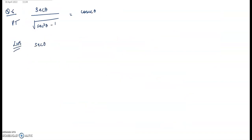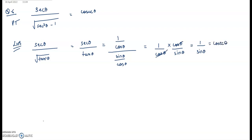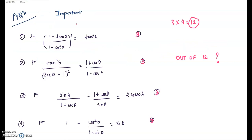LHS is secθ / √(sec²θ − 1). Since sec²θ − 1 = tan²θ, this becomes secθ/tanθ. Writing secθ = 1/cosθ and tanθ = sinθ/cosθ, we get (1/cosθ) × (cosθ/sinθ) = 1/sinθ, which equals cosecθ. These are some important previous year questions — you can try them and comment your score out of 12.